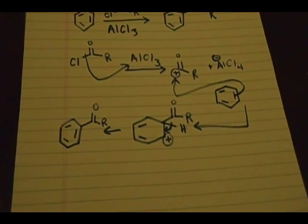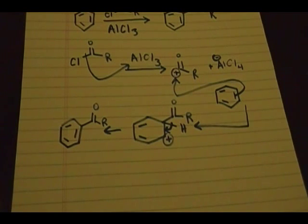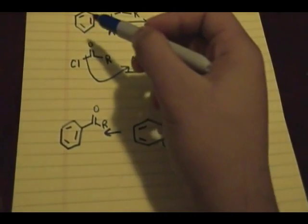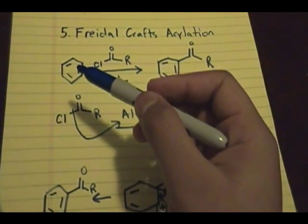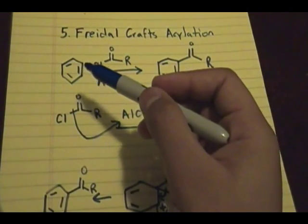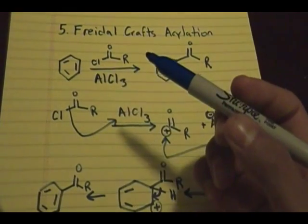You add an acyl group to the aromatic ring. Again, for the Friedel-Crafts acylation, this reaction will not work if your starting aromatic ring has an NH2, NO2, or a strong electron withdrawing group present on it.